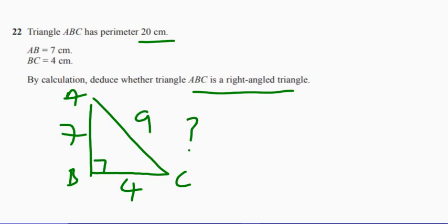Now, to show if it's a right-angle or not, we just use Pythagoras. So Pythagoras, square this side, so 4 squared equals 16. Square this side, so 7 squared equals 49.